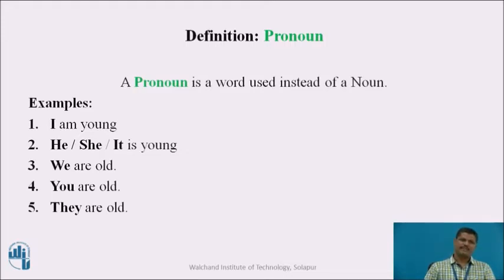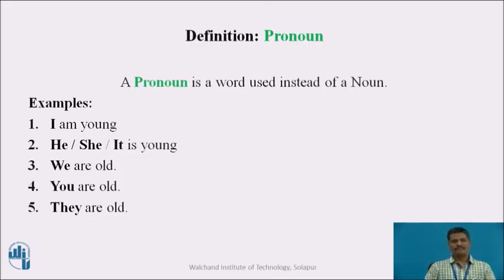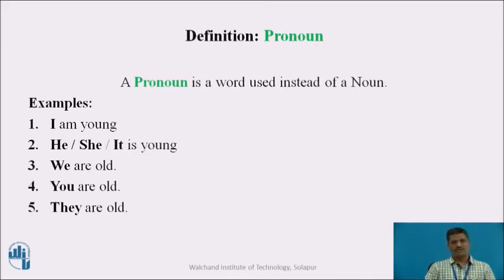Second sentence: he/she/it is young. So 'he is young', 'she is young', or 'it is young'. In these sentences, he, she, and it are used as personal pronouns. They are used in place of a noun, which might be the name of a person, a man, or a woman. Sentence three: we are old — 'we' is a personal pronoun used for a plural noun. Sentence four: you are old. Sentence five: they are old. All these highlighted words are working as pronouns and are used in place of various nouns, and hence they are called pronouns.